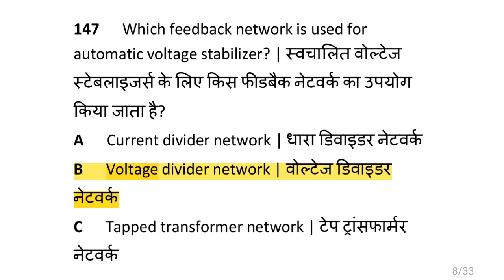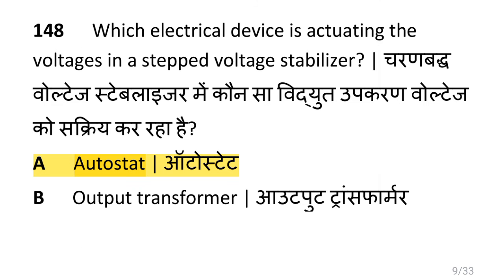Which feedback network is used for an automatic voltage stabilizer? i.e. voltage divider network. Which electrical device is actuating the voltage in a static voltage stabilizer? i.e. autostat.